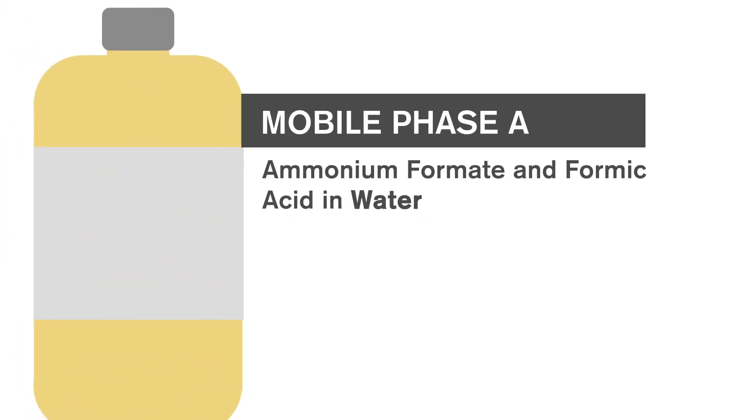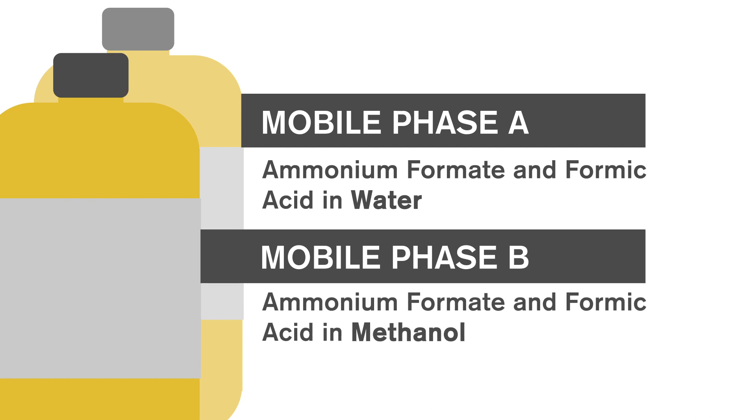Mobile phase A is ammonium formate and formic acid in water, while mobile phase B is ammonium formate and formic acid in methanol. The two liquids are pumped in percentages through the tubing of the LC.